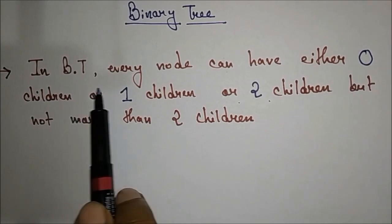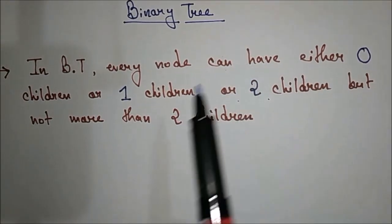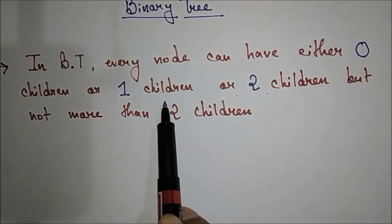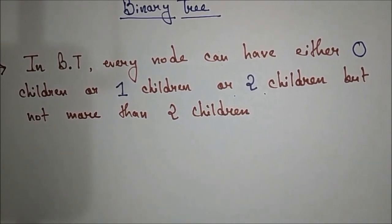In a binary tree, every node can have either 0 children, 1 child, or 2 children, but not more than 2 children.